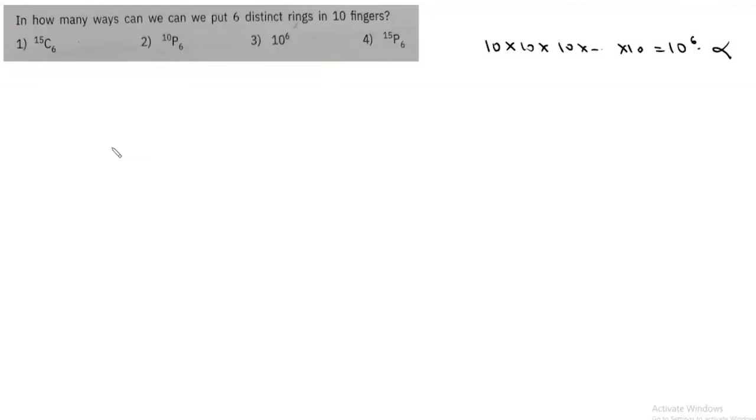Now the correct way of solving the question is we have 10 fingers. If we look at the first ring, for this first ring we have 10 choices, so it can be put in fingers 1 through 10.